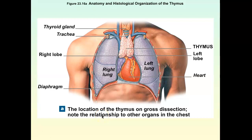This is part two of the lecture on the lymphatic system. We're beginning with letter D, thymus, in your outline. The thymus is a gland, and it sits posterior to the sternum.